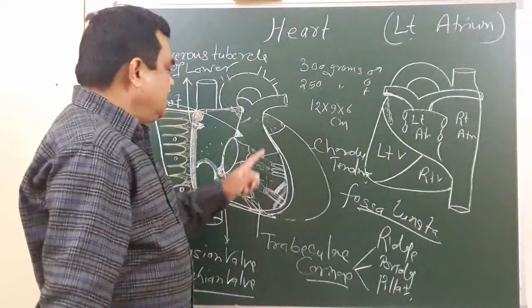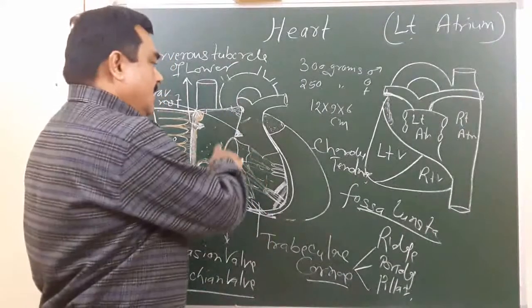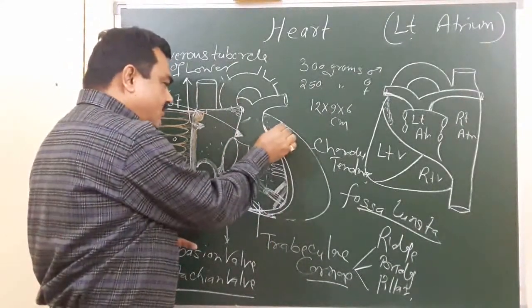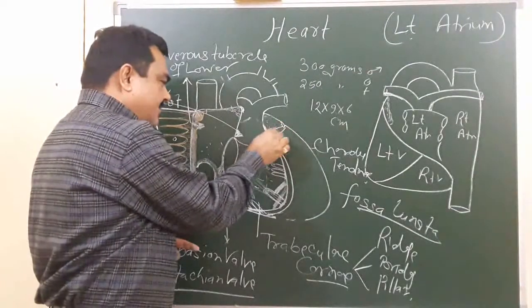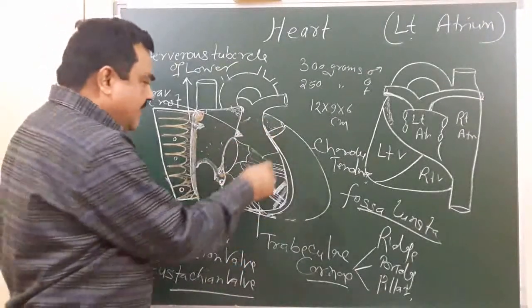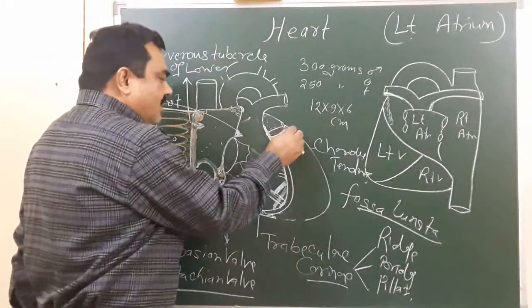So this is all about the chambers. There is an atrioventricular orifice. Here I am showing this part - this is the left atrioventricular orifice. This is guarded by the mitral valve.